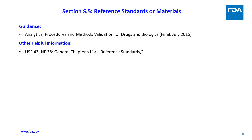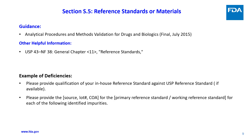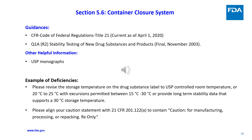Section S.5 guidance: Analytical Procedures and Methods Validation for Drugs and Biologics; other helpful information includes USP 43–NF 38 General Chapter 11 Reference Standards. Examples of deficiencies: please provide qualification of your in-house reference standard against USP reference standard if available. Please provide the source, lot number, and certificate of analysis for the primary reference standard or working reference standard for each of the identified impurities.